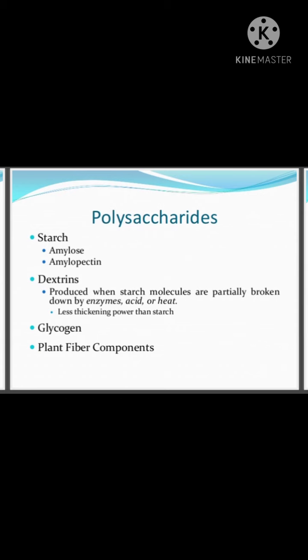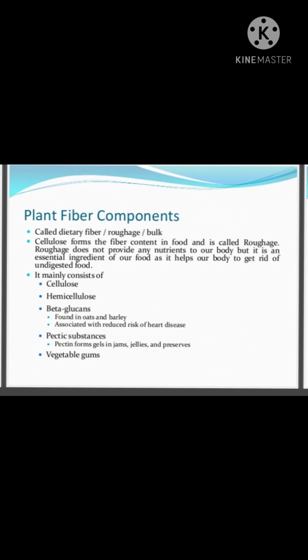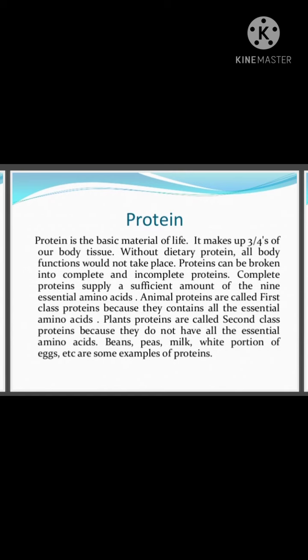Polysaccharide examples include starch, dextrin, glycogen, and plant fiber components. Starch has two forms: amylose and amylopectin. Starch molecules are partially broken down by acid, heat, or enzymes to give a product called dextrins. Dietary fibers are the part of food that provide fibrous content; even though they provide no nutrients, they help remove undigested food. Examples include cellulose, hemicellulose, pectin, vegetable gums, and beta-glucans.